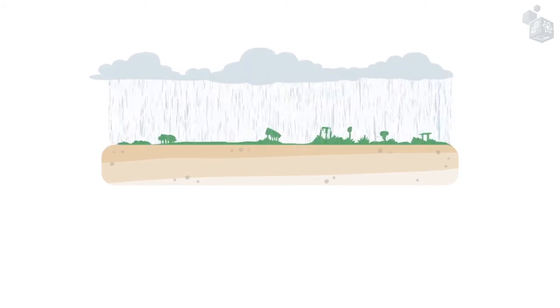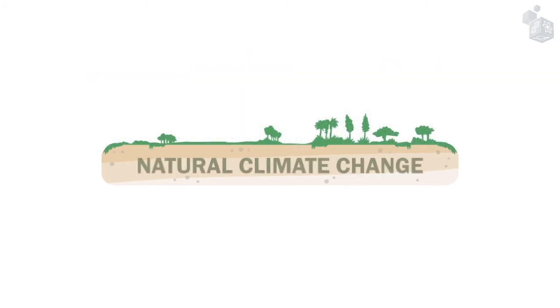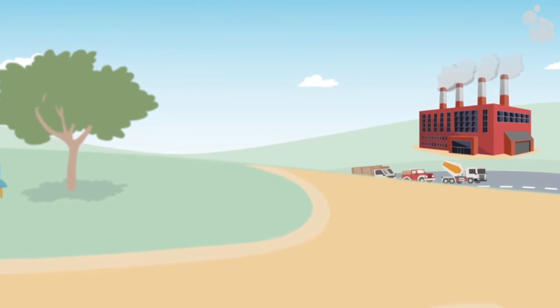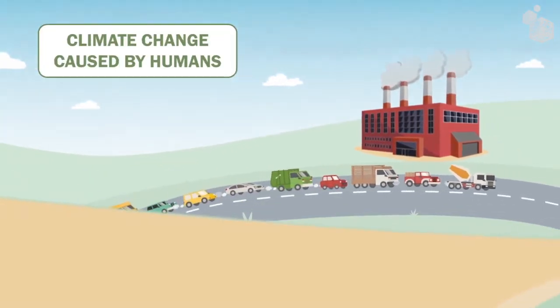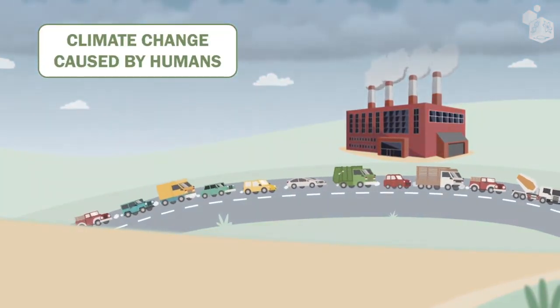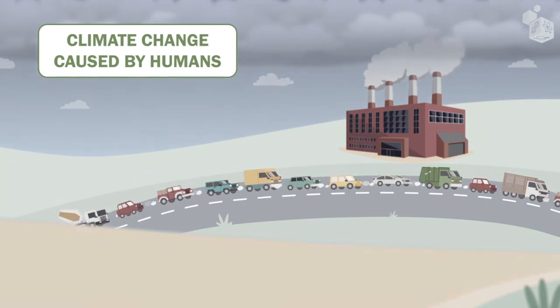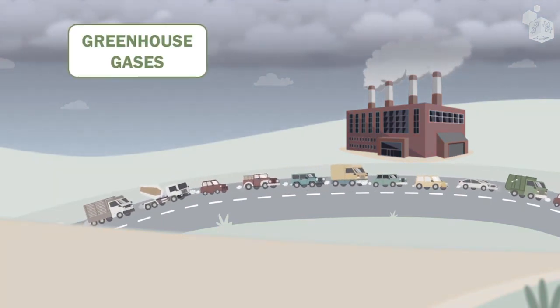For millions of years, the Earth's climate has been changing naturally. However, in the last century the climate has been changing at an alarming rate due to human activity and the increased atmospheric concentration of greenhouse gases.